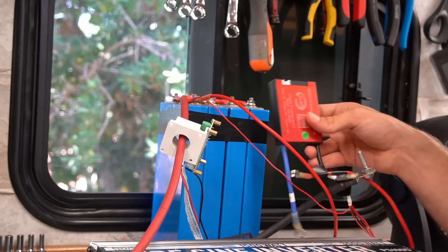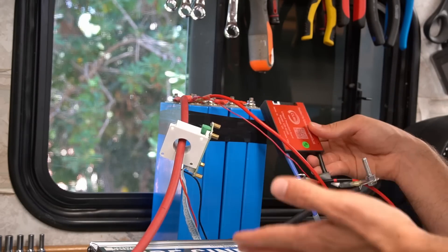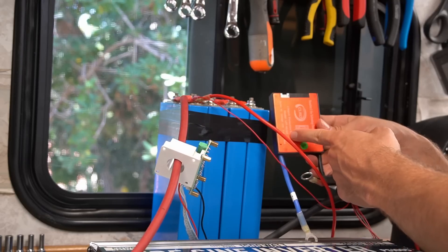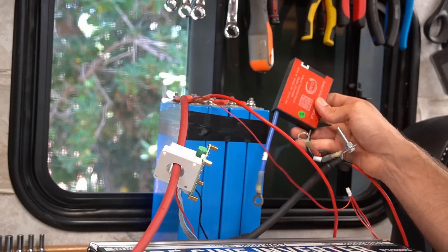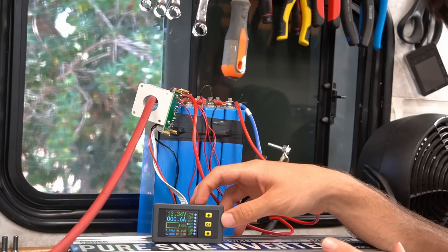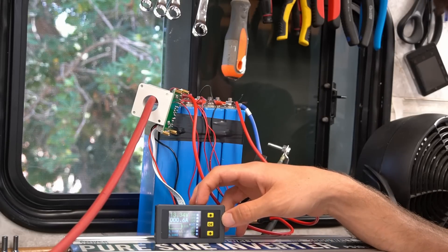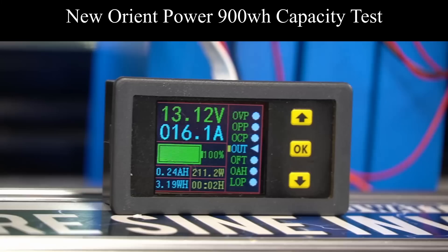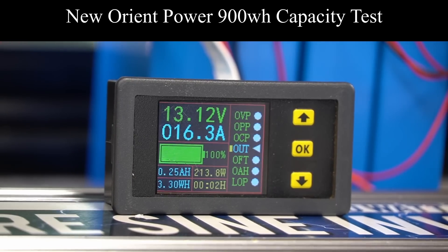And what amazes me is it only takes like five minutes to build a battery. Like once you have all these connectors on here it takes minutes to add a BMS. So if you want to do it yourself it's not hard. And for this battery we need to draw 15 amps from it continuously if we want the 0.2C discharge rate for the test. So we're going to run this for five hours and come back to it.